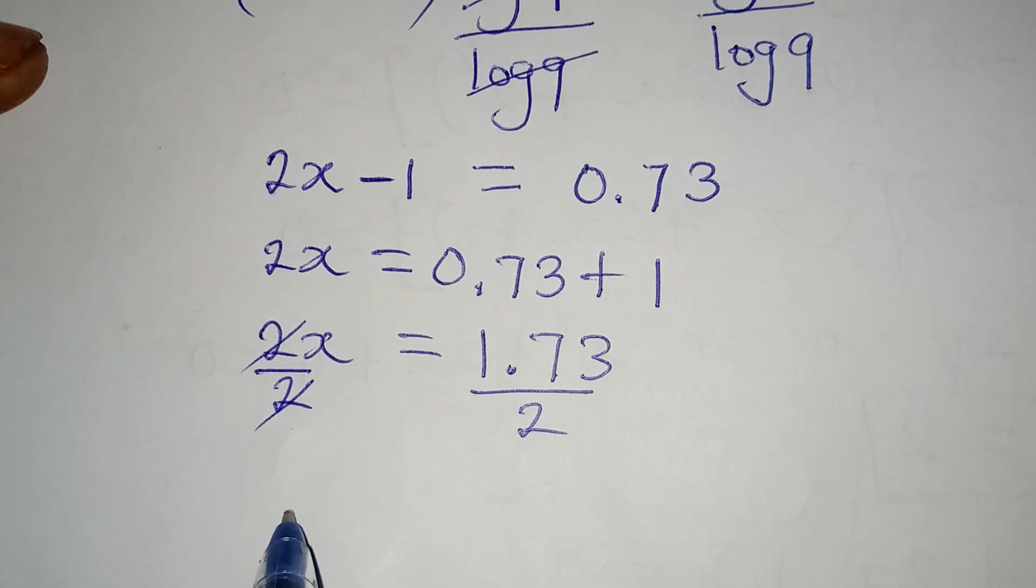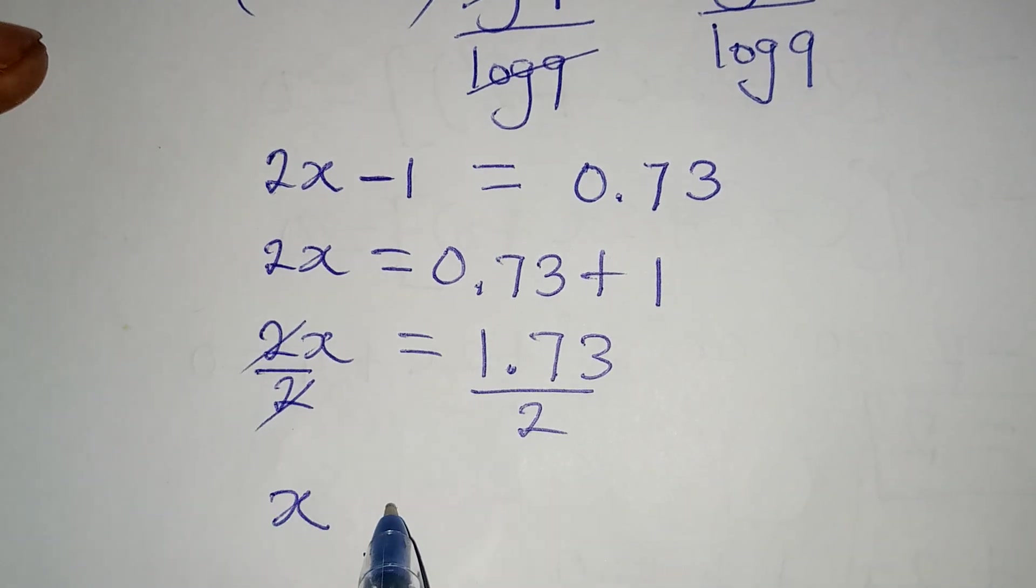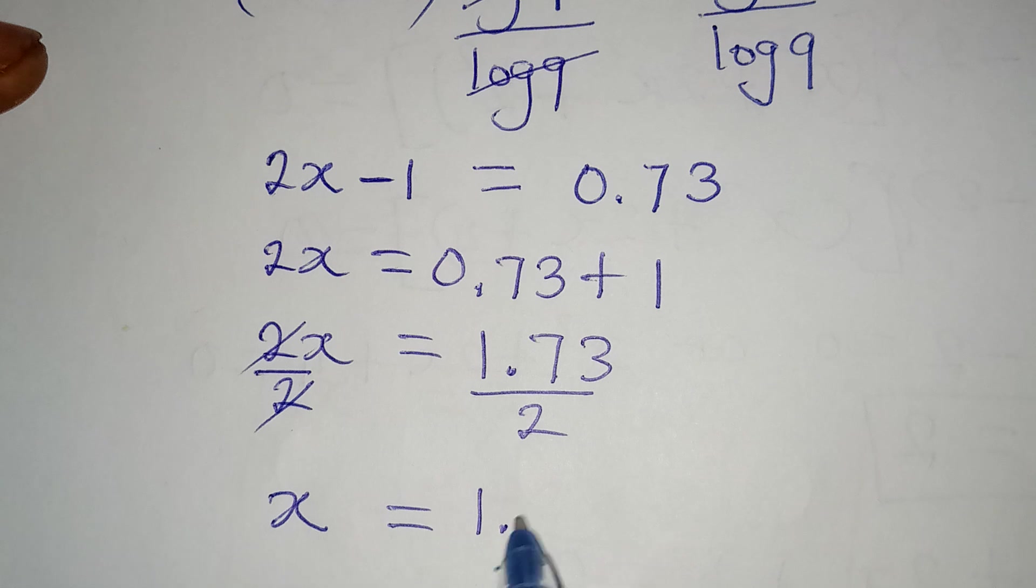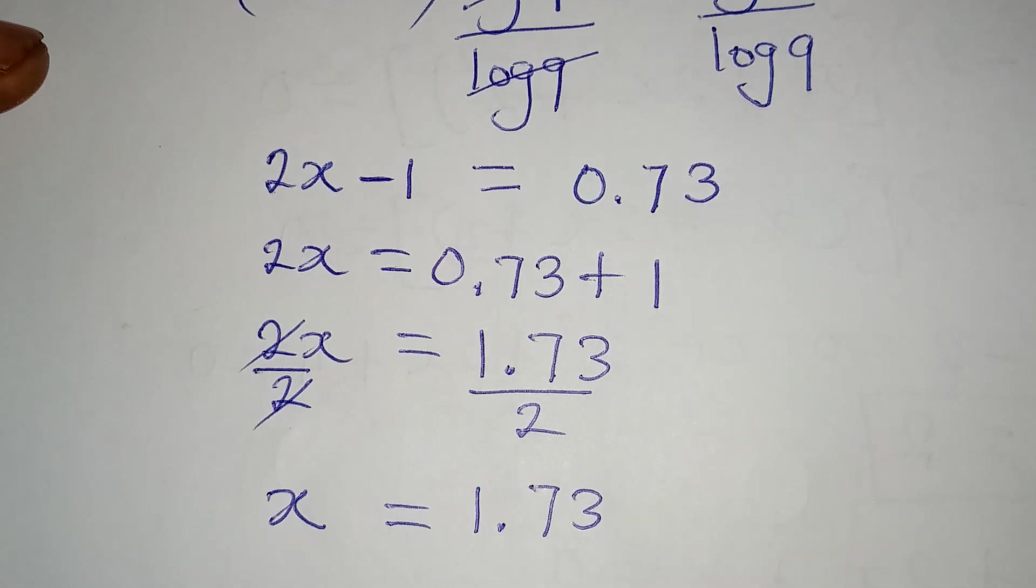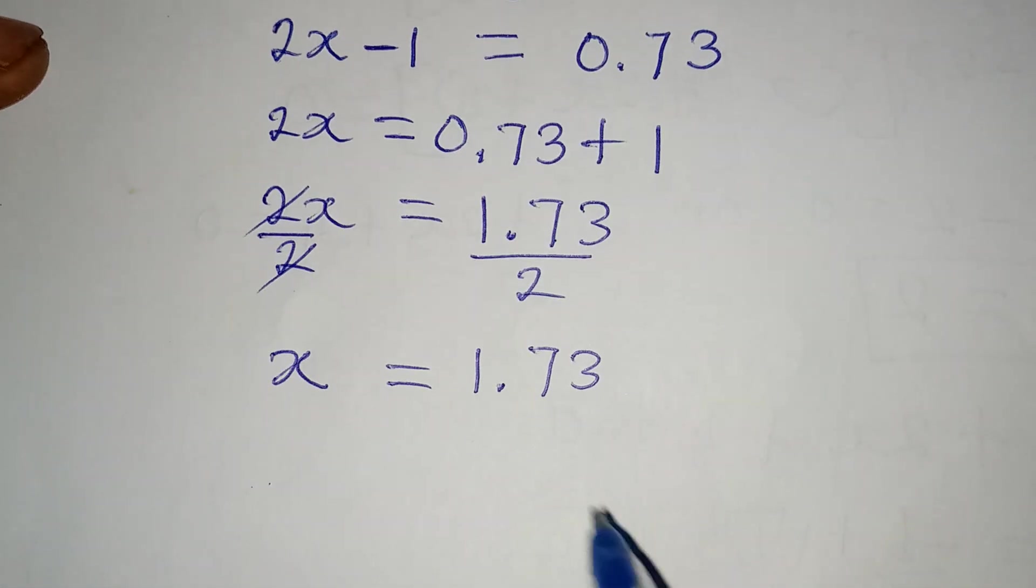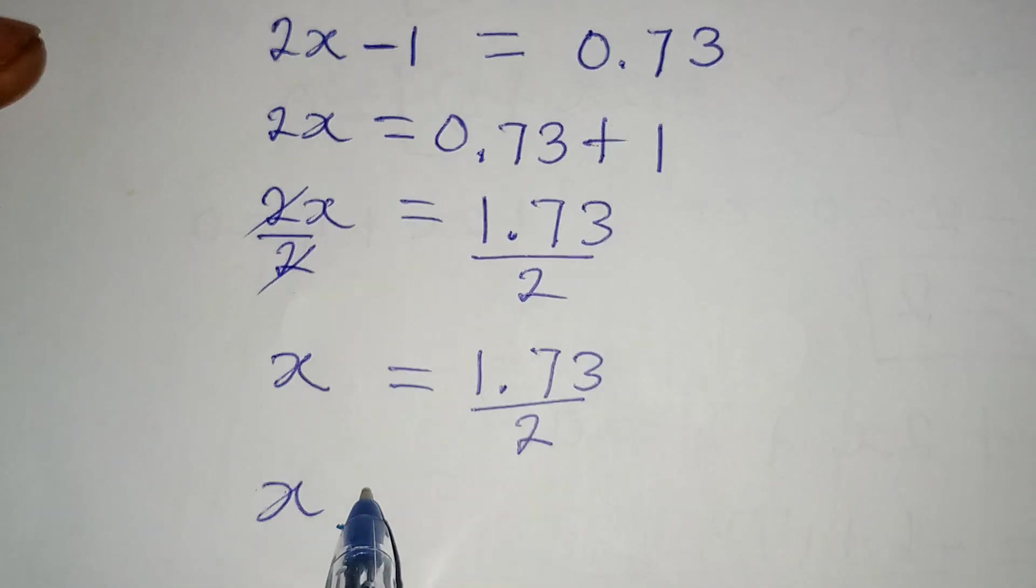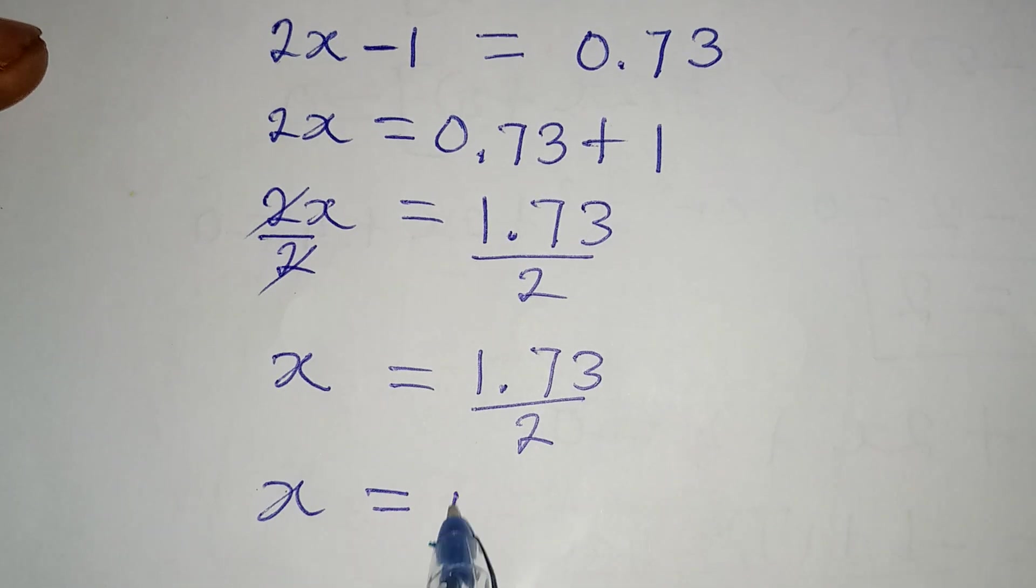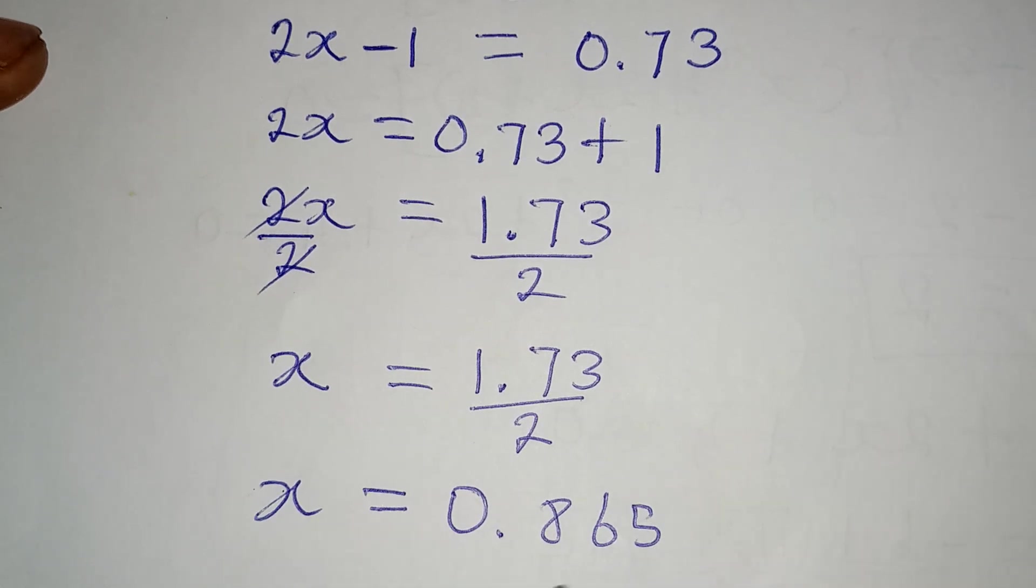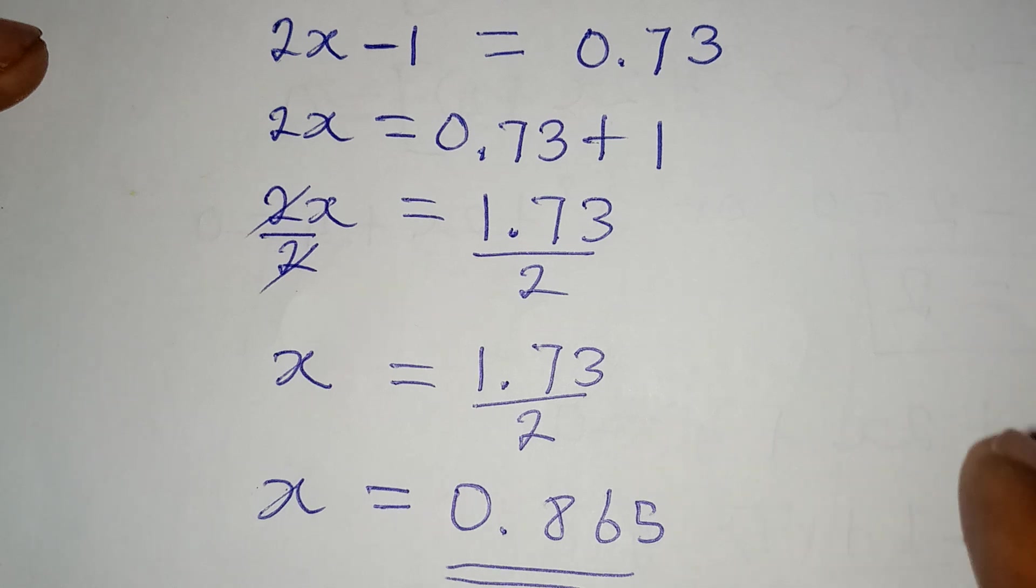This will cancel and now x is alone and it's equal to 1.73 divided by 2, and then our x is equal to 0.865. So this is the value of x that will satisfy the given equation.